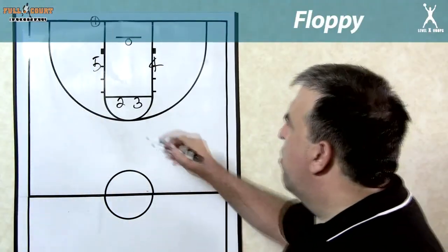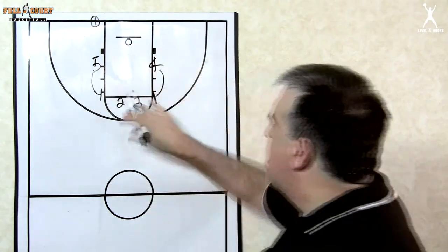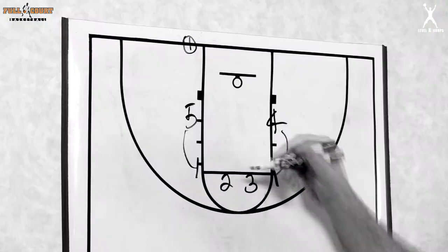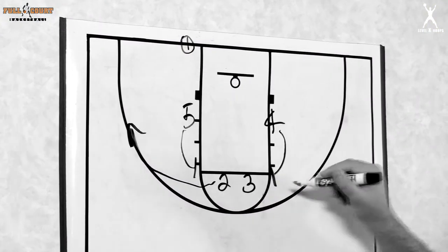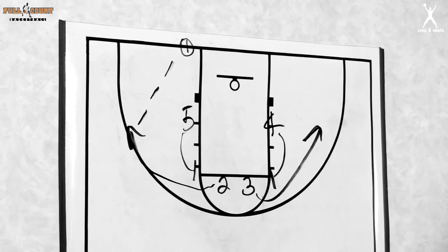In this play, we're going to start it with a little floppy action from out of bounds, five and four screening for three. Now you can have two and three cross, but just for illustration purposes, we'll have two come off of five and three come off of four. One's going to pass it in to two.